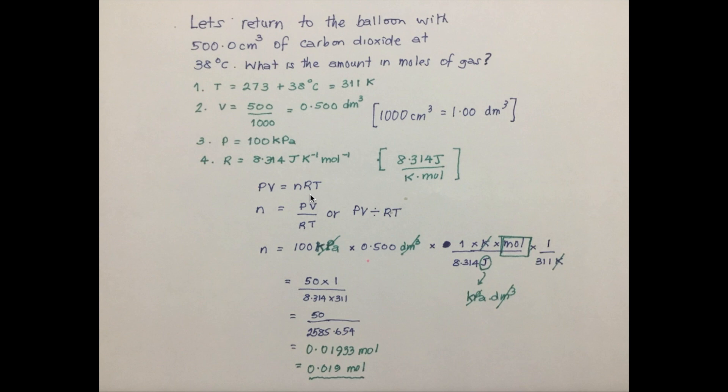But as we go about using this ideal gas equation, I want to point out a number of important details for you. And first of all, 38 degrees Celsius must be converted into Kelvin. That is done by adding 273 to 38.0. That comes to 311 Kelvin. Then we convert 500 milliliters or 500 cm³ into dm³ by dividing by 1,000, because 1,000 cubic centimeters or cm³ equals one dm³.